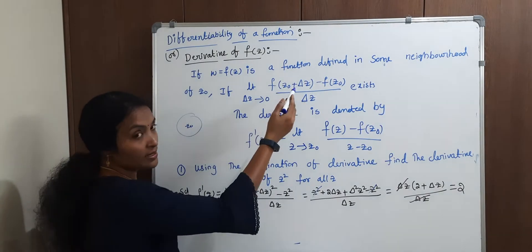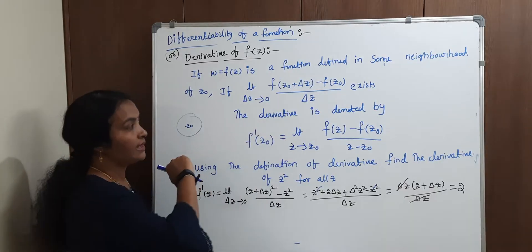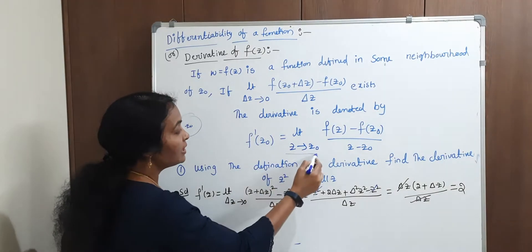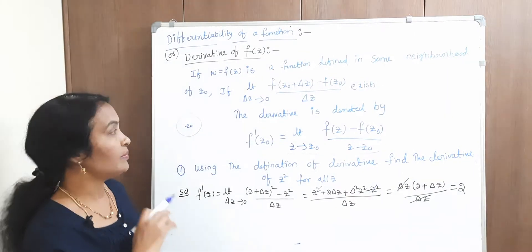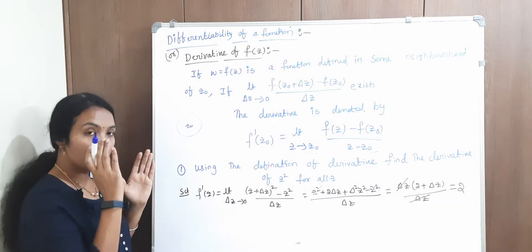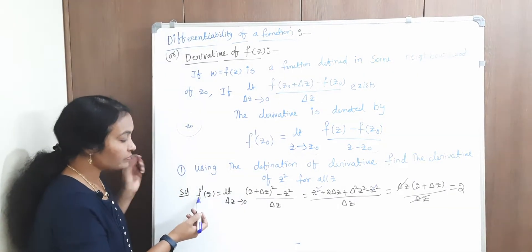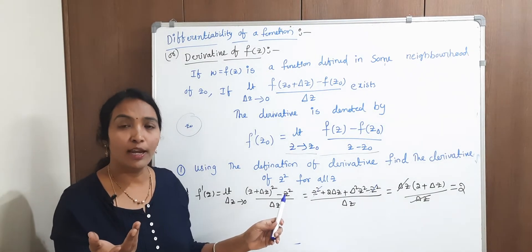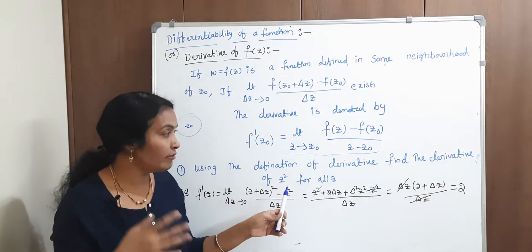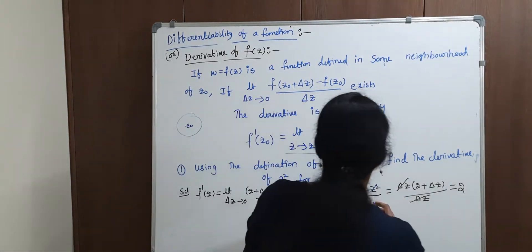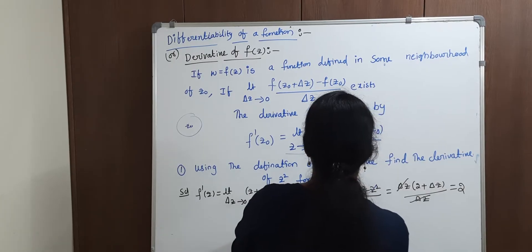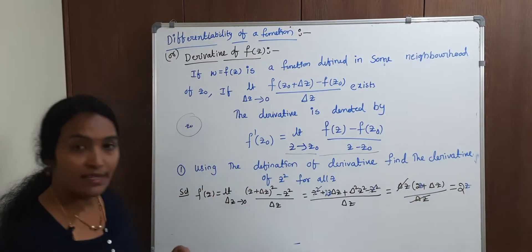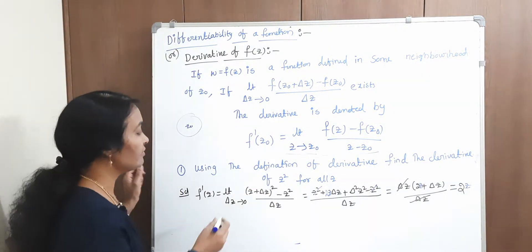From second year intermediate, we know this: if the limit of f of x plus delta x minus f of x by delta x exists, then the derivative exists. We denote this as f dash of z. This is the principle. Now, how do we apply this principle to problems? Actually, from intermediate, for f dash of z, this is the principle.